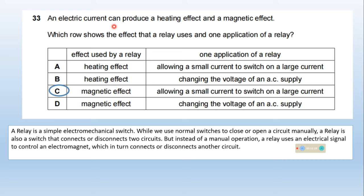An electric current can produce a heating effect and a magnetic effect. Which row shows the effect that a relay uses and one application of a relay? A relay is a simple electromechanical switch. While we use normal switches to close or open a circuit manually, a relay uses an electrical signal to control an electromagnet, which connects or disconnects another circuit.